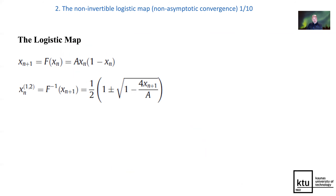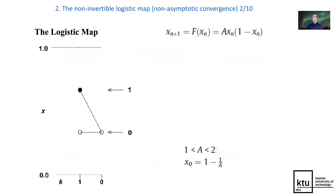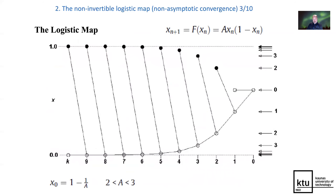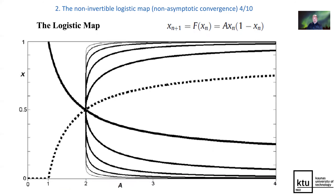The logistic map is non-invertible, and each time you need to make a backward step, you have to choose which way to go. Based on such backwards computation, it is possible to construct the stable and unstable manifolds, and one is able to see the whole structure of the stable and unstable maps.